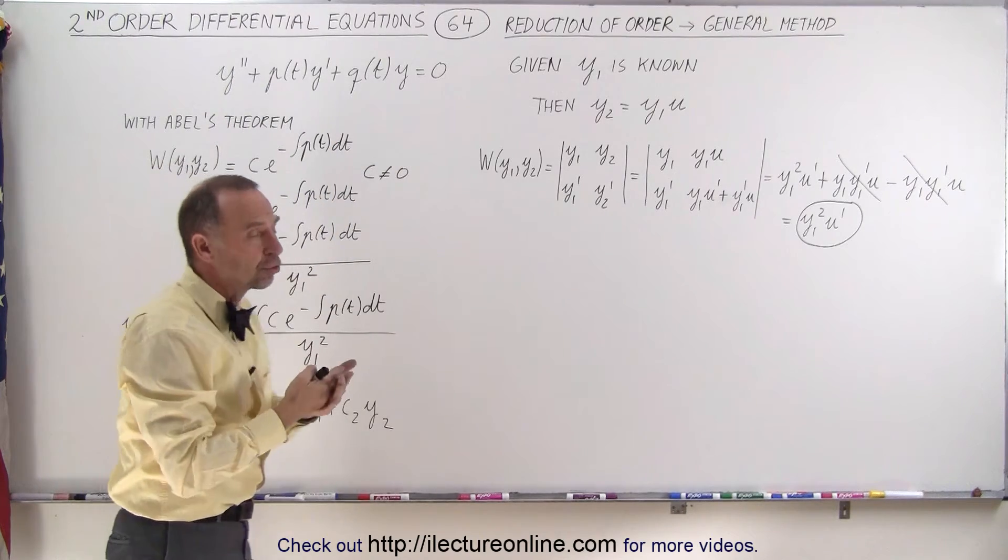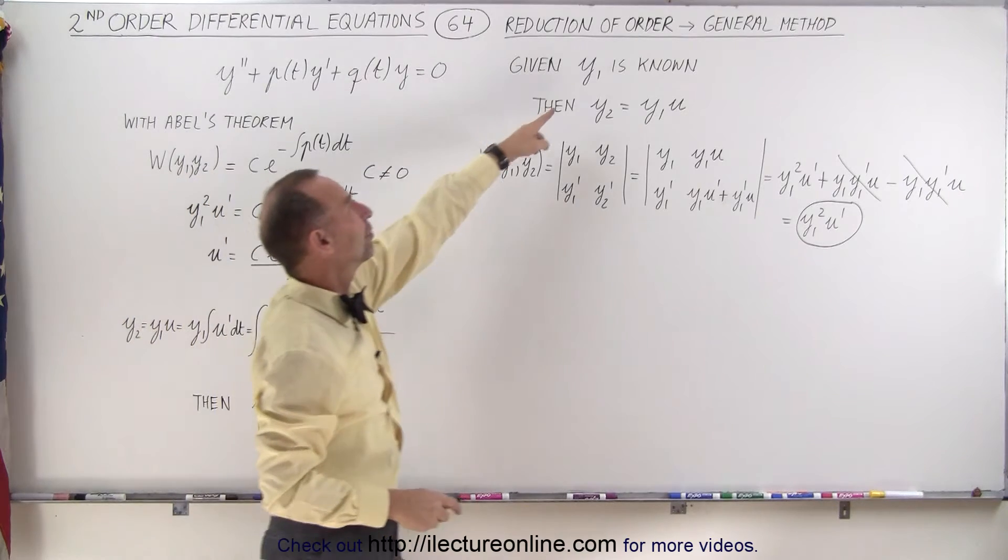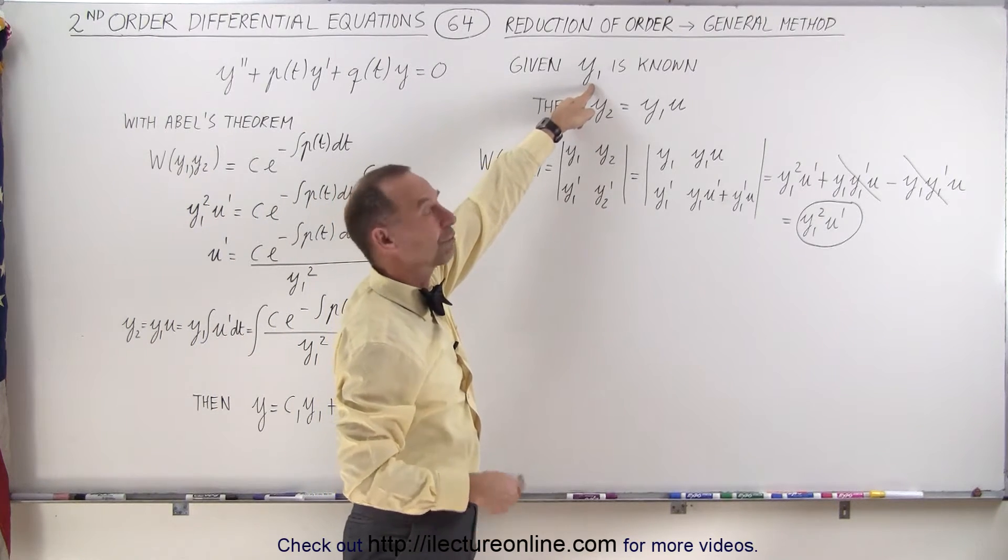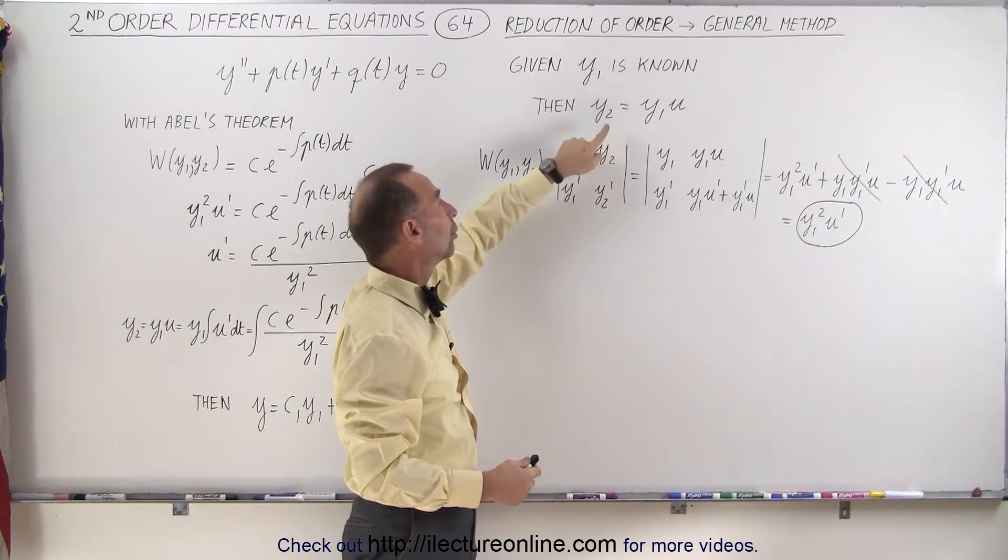the method of reduction of order is considered the method where one of the solutions is known. For example, y1 is known, and we're looking for y2.